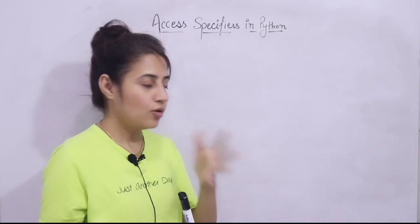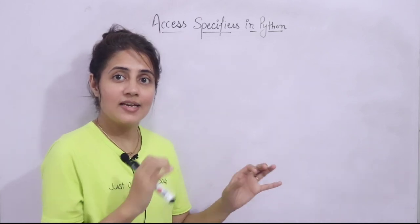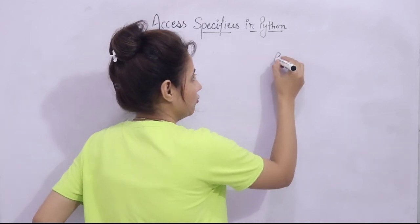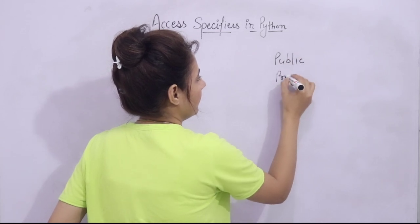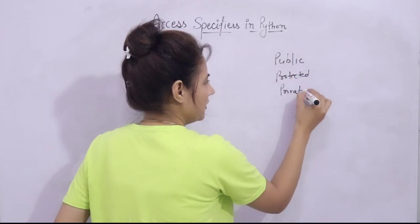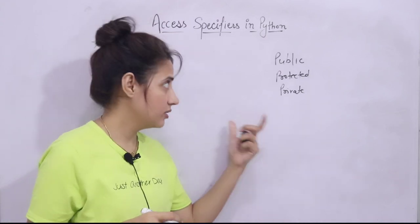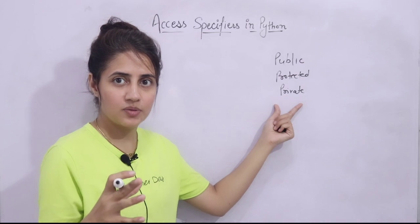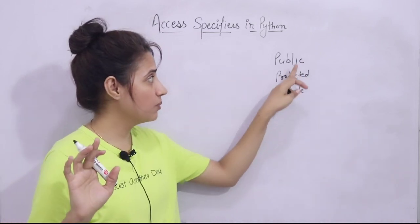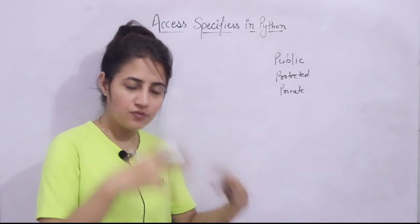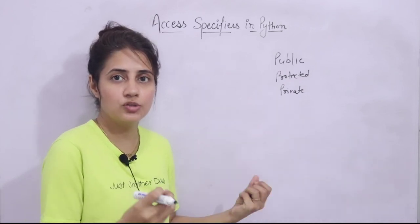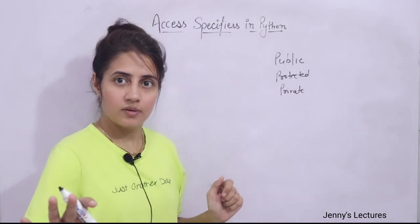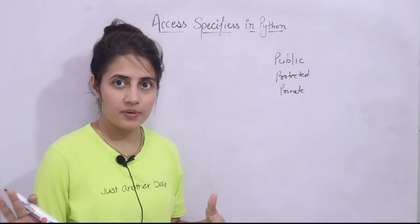For that, we have access specifiers. We have three types of access specifiers: public, protected, and private. Not just in Python — in every language, like Java and C++ also have these access specifiers. So first we'll discuss what public, protected, and private are generally, then specifically in Python how we apply these access specifiers in our programs.